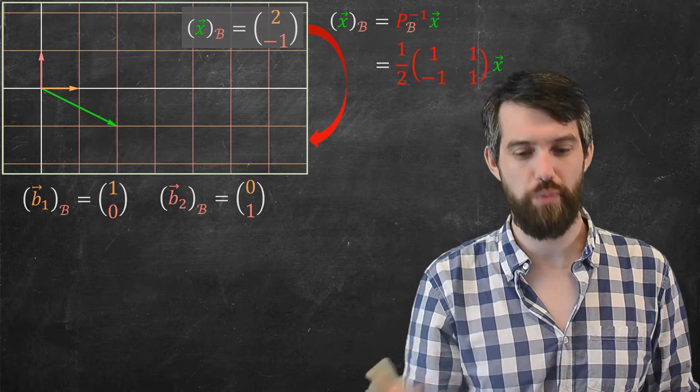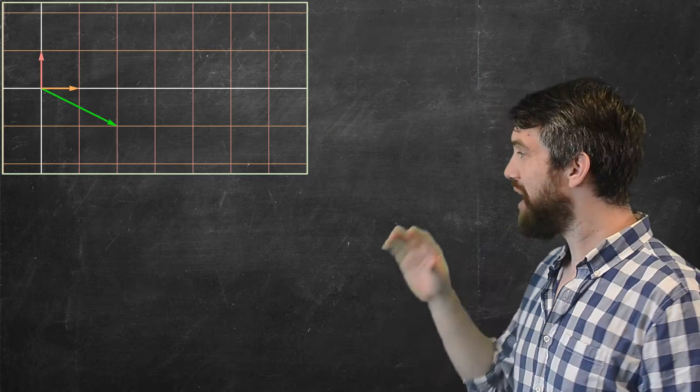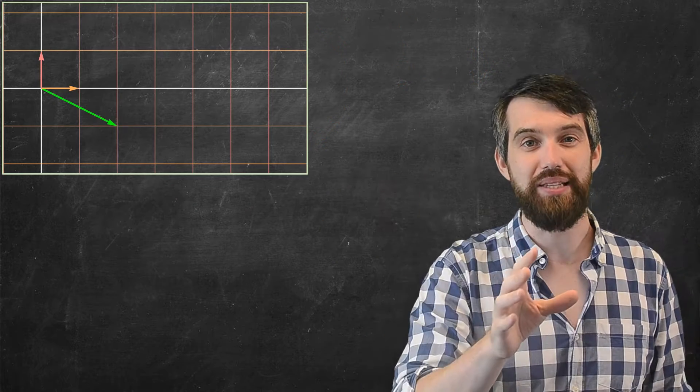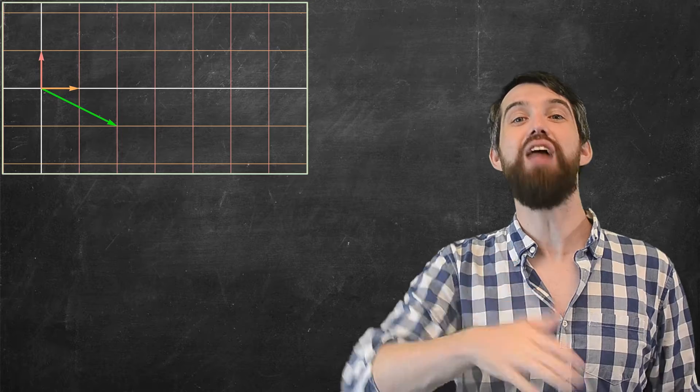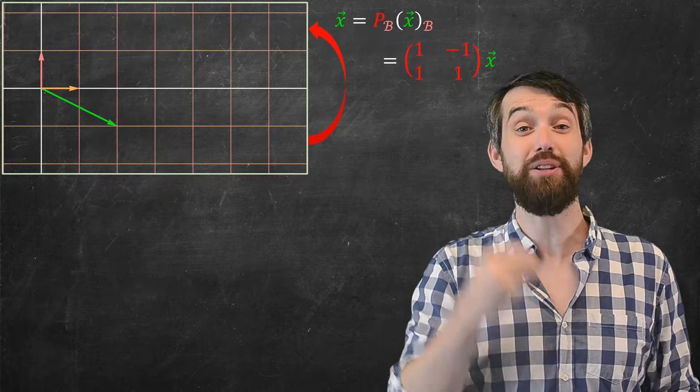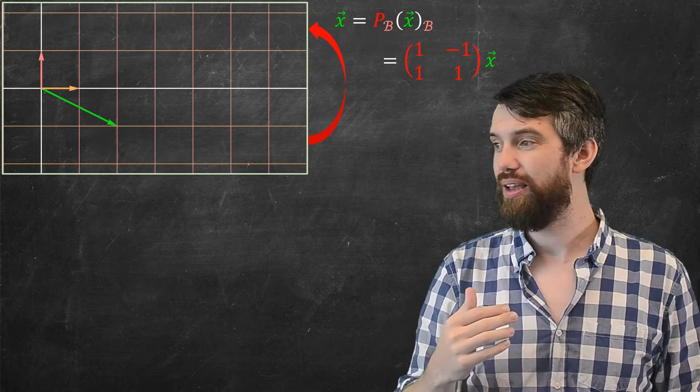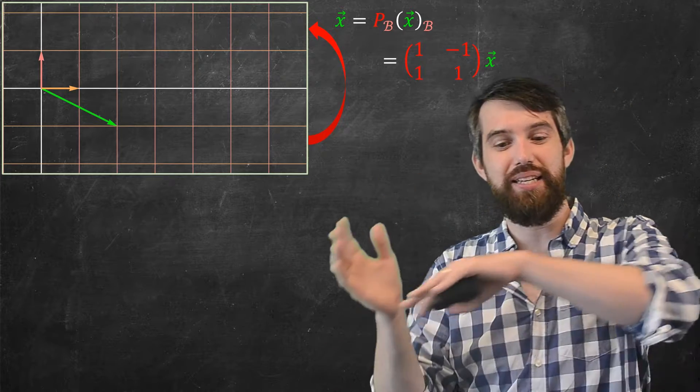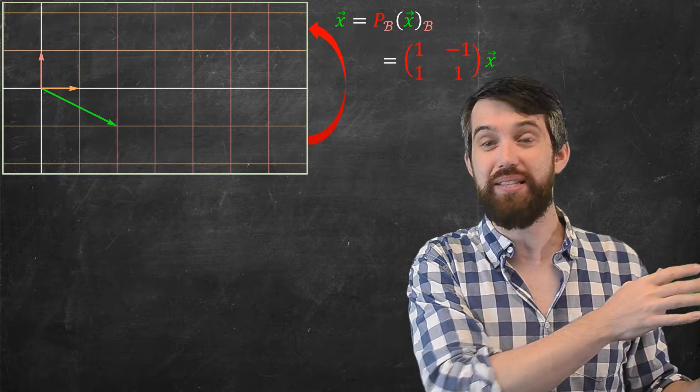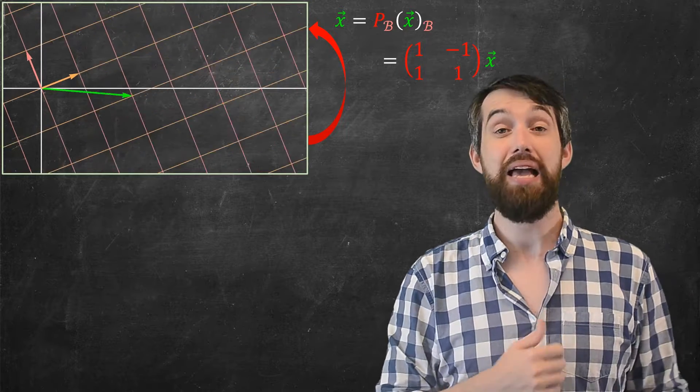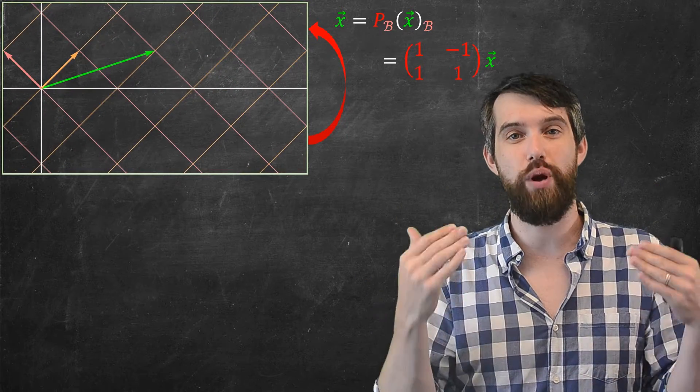And then we can undo this whole process. So, for example, now that I'm living in the b basis, I can apply the other matrix that was relevant. And I can multiply by p sub b. And if I do this, I go from the b basis back to the standard basis, and, well, what happens if we program it in? Indeed, it takes us back exactly to where we began.